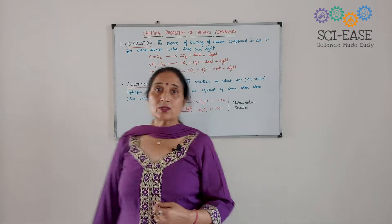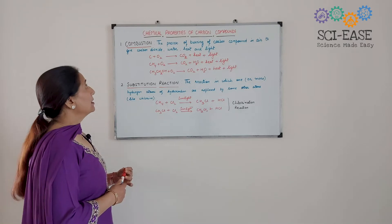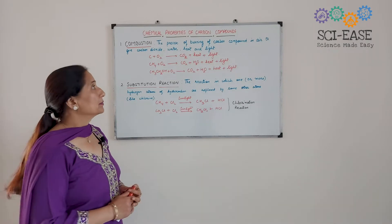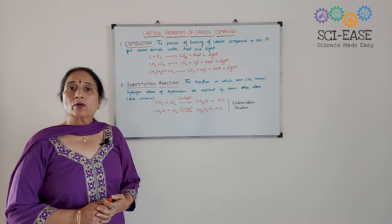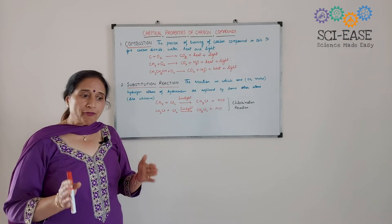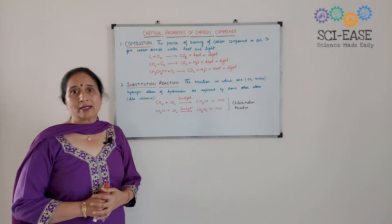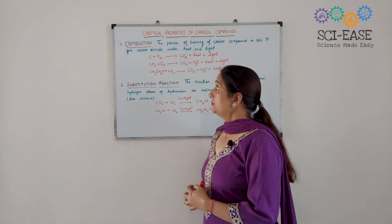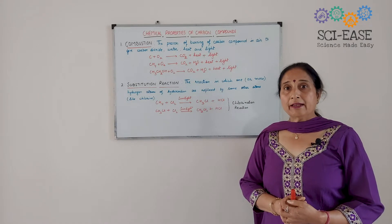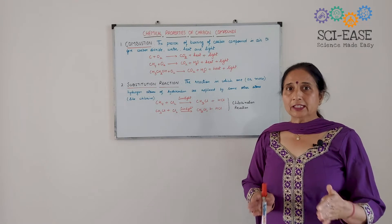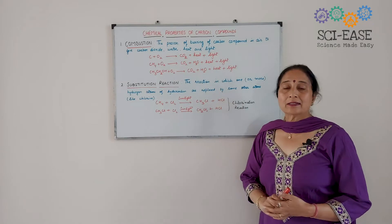Now, first thing: what is combustion? The process of burning carbon compounds in air to give carbon dioxide, water, plus a lot of heat energy that is evolved, and sometimes light energy that is also given out. So when we burn simply carbon or coke in air, in sufficient supply of air, carbon dioxide plus heat plus light is produced.